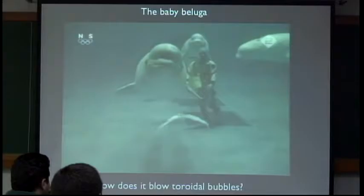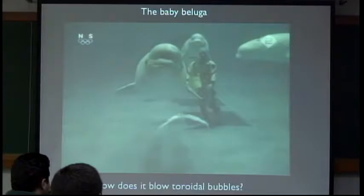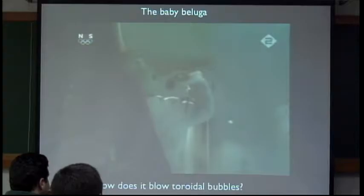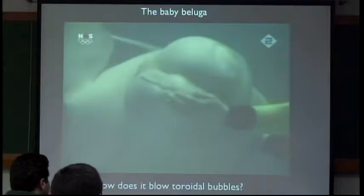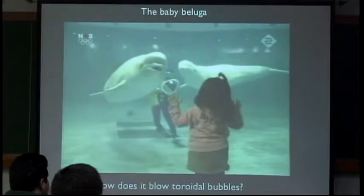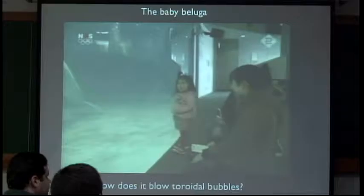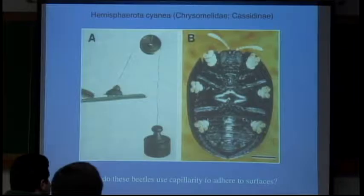This is not such a small creature, but here's one which evidently knows how to use surface tension. It is a baby beluga blowing a toroidal bubble. I like the response of the animal — it clearly knows what it's doing. So we'll come to vortices.